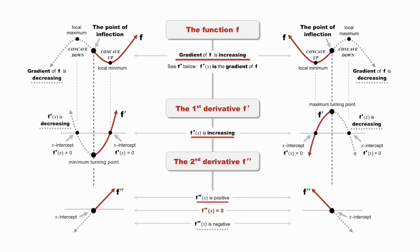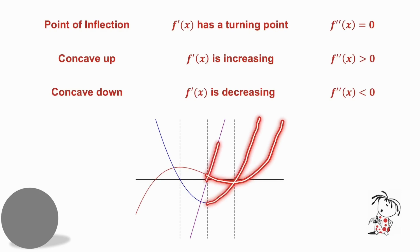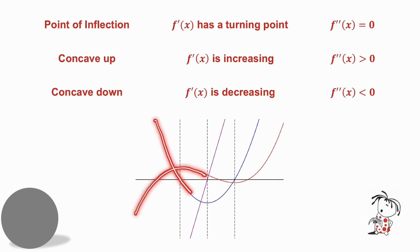Exactly the same thing happens where a is negative. I suggest you pause the video and have a good look at the slide. To summarize: at a point of inflection, the derivative has a turning point and the second derivative is zero. Where the graph is concave up, the derivative is increasing and the second derivative is positive. Where the graph is concave down, the derivative is decreasing and the second derivative is negative.